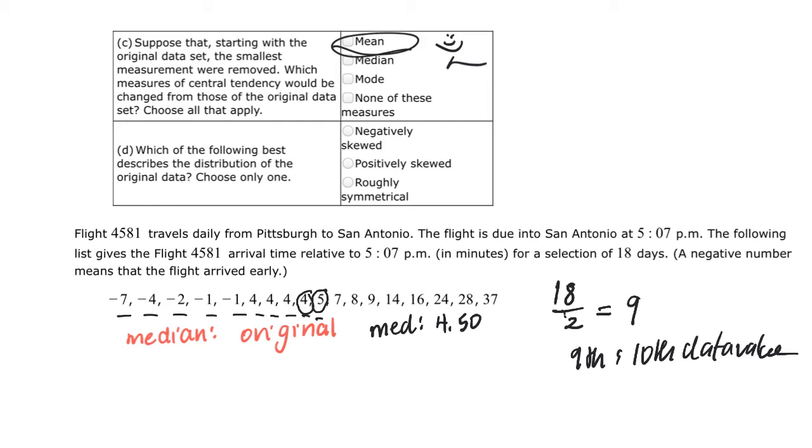All right. So now let's find it for when we remove the negative 7. So I'm going to remove the negative 7. And now I'm going to find the median for the new data set. So now instead of having 18 data values, that's going to change. Now I don't have 18. So I don't have the 18 now. I have 17. So how do I find it when I have 17 data values?